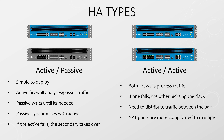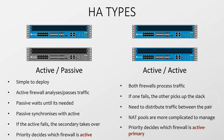In both HA models, each firewall has a priority. In active-passive, this priority decides which firewall is active. In active-active, the priority decides which firewall is the active primary firewall. Priority comes into play if preemption is enabled, which we'll see a little bit later. This is also important when a failed firewall has been repaired and added back into the pair.